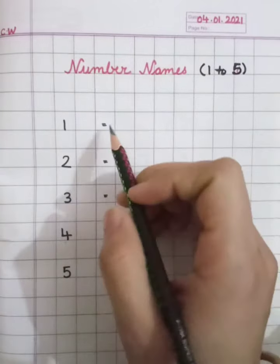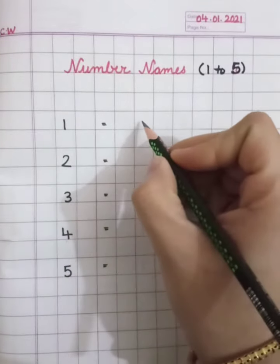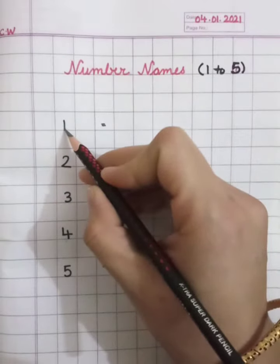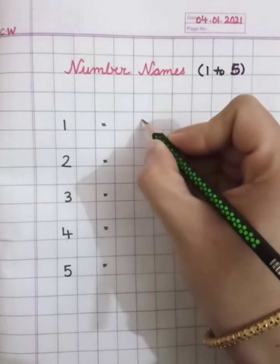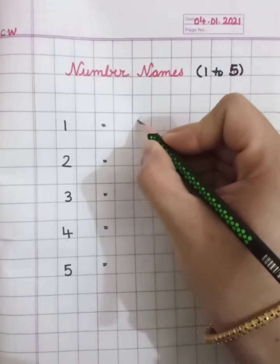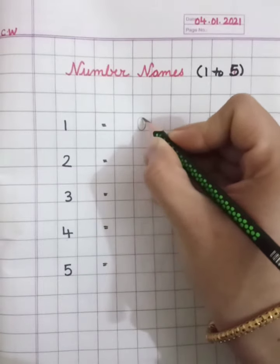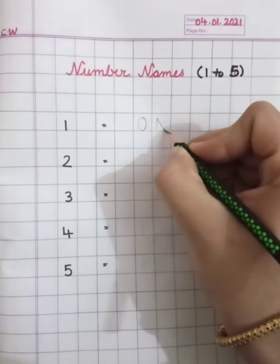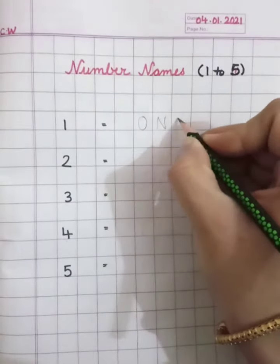After that we have to write letters, means spelling of one. Here we have to write in one box one letter. First we have to write O, N, E, one.